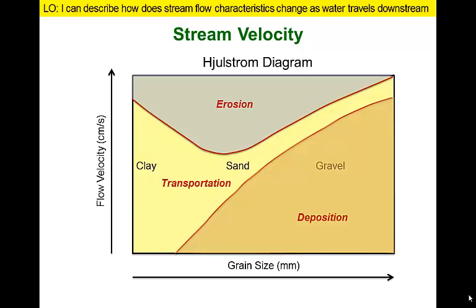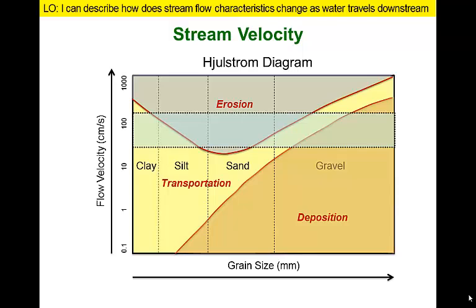Let's fill in more detail on the diagram by showing the divisions between different grain sizes and adding specific flow velocities along the y-axis. We'll also add typical stream flow velocities ranging from about one-half to four miles per hour, or about 30 to 180 centimeters per second, as seen in streams like the Colorado and Mississippi rivers.